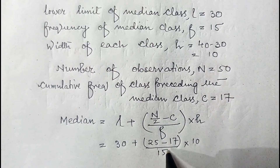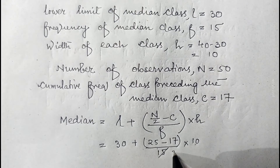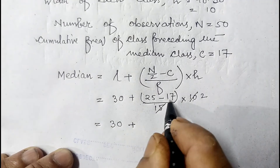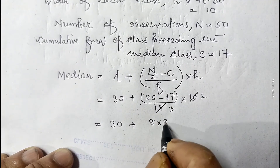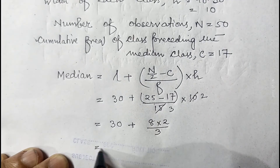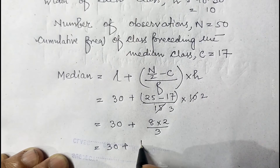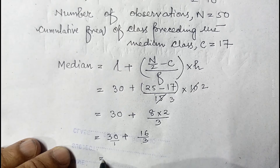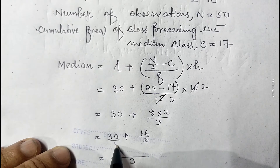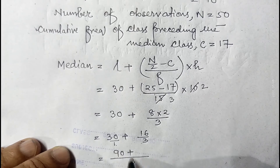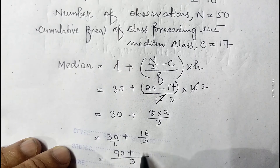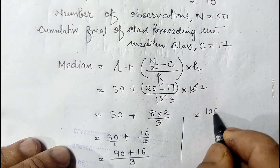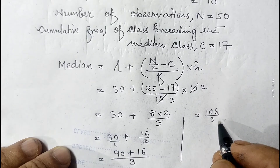We can cancel 15 and 10 by 5, giving 2 and 3 respectively. So it becomes 30 plus (8 × 2) / 3, which is 30 plus 16/3. Taking LCM of 1 and 3, we get (90 + 16) / 3 = 106/3. Dividing 106 by 3 gives 35.33.